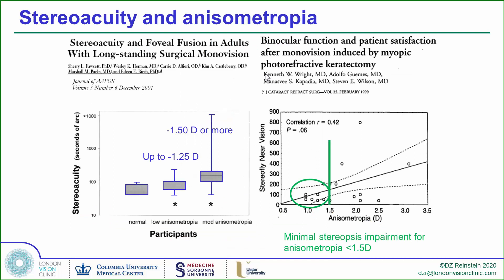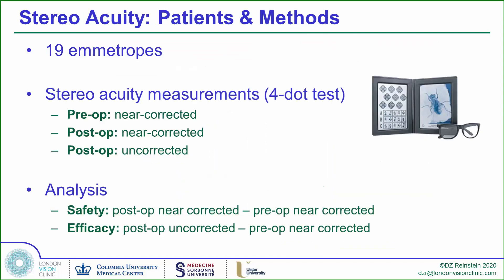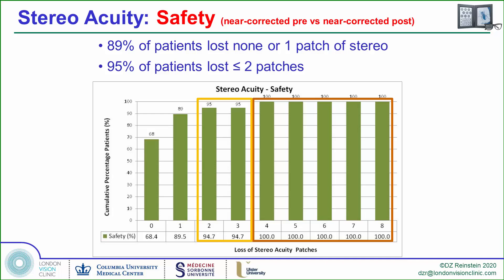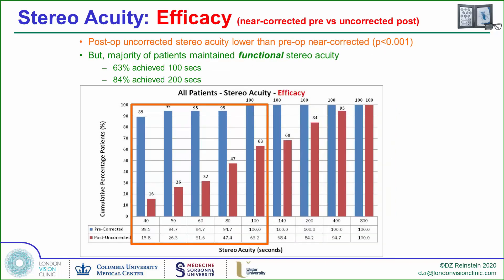We know that four or more log units of stereoacuity are lost when anisometropia is minus 1.50 or more. We tested a subset of patients for pre-op best spectacle-corrected stereoacuity and how it changed post-op to determine stereoacuity safety, and also measured post-op anisometropic uncorrected stereoacuity as a measure of efficacy. Only 5% of eyes lost up to three patches of stereoacuity, with about 90% unchanged or with one-patch loss. Most surprisingly, 63% had 100 seconds of uncorrected stereoacuity and over 80% had 200 seconds.